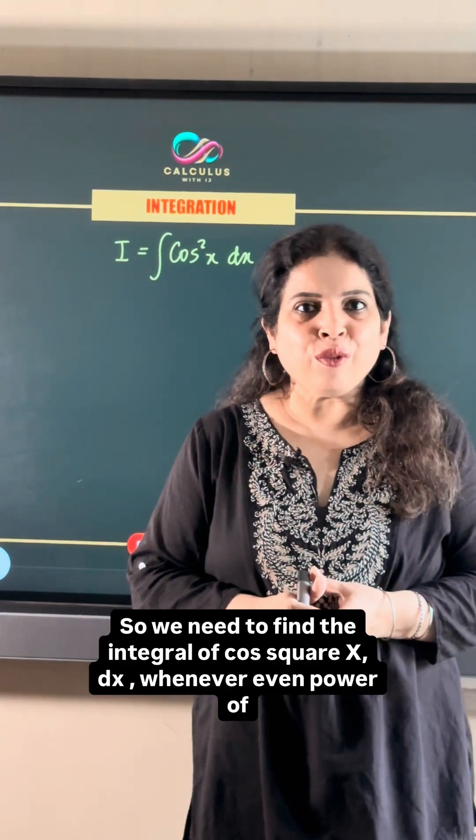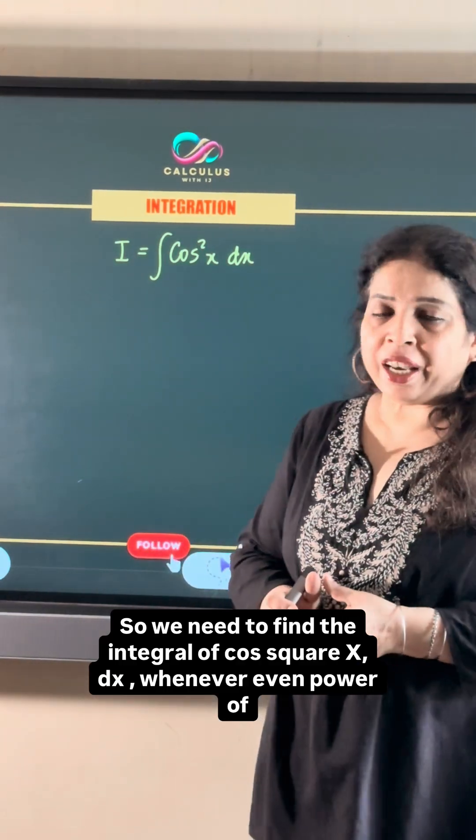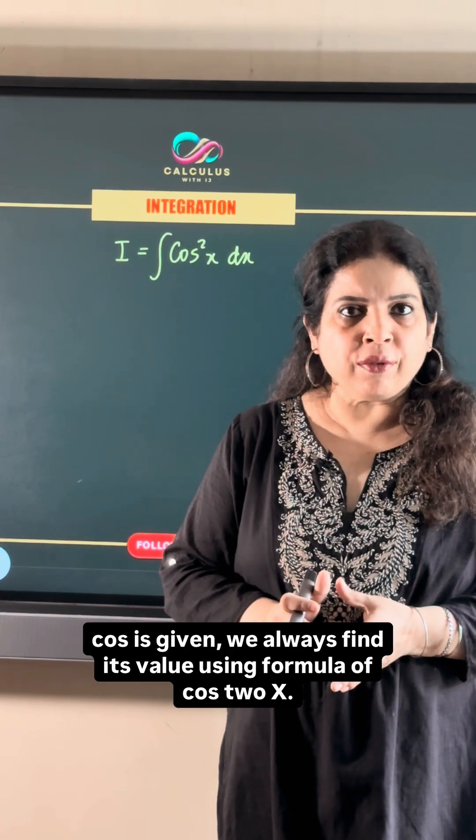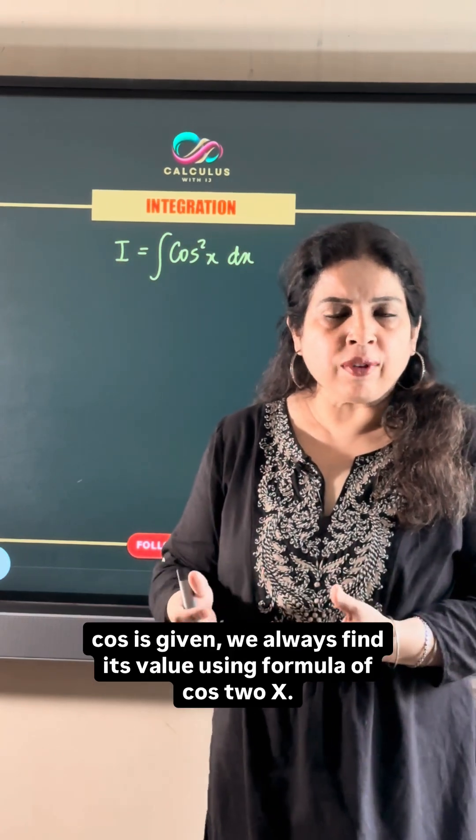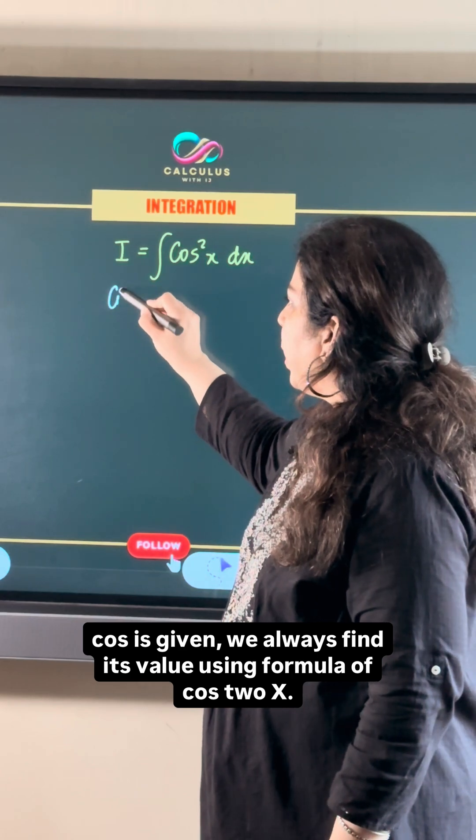So we need to find the integral of cos square x dx. Whenever an even power of cos is given, we always find its value using the formula of cos 2x.